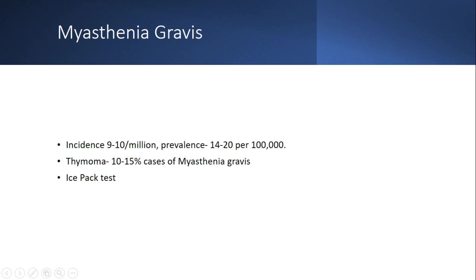The ice pack test is a bedside test I highly recommend — easily available and it may appear in exam scenarios. It has sensitivity of 80 to 90%. We sometimes combine it with single-fiber EMG to increase sensitivity further. However, the ice pack test is only helpful for ocular myasthenia gravis in seronegative patients, not for generalized myasthenia gravis.